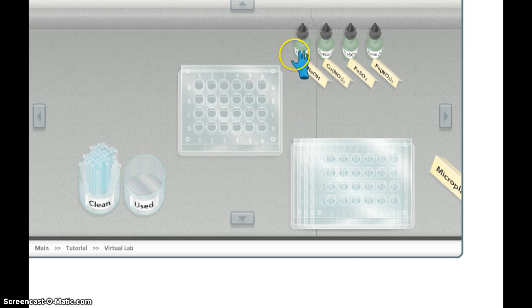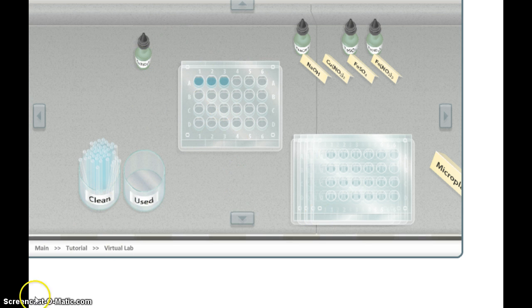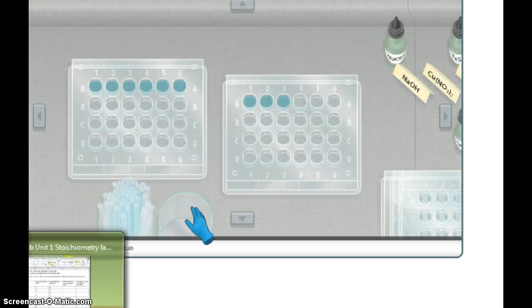All right. So let's go ahead and start with that. And we're going to start with copper 2 nitrate. And we're just going to go five drops. And then ten drops. And how many drops here? Fifteen. Now this is going to take me a little while to do. So I'm going to hit pause. And then I'm going to fill all these up. And then I'll start our recording again.